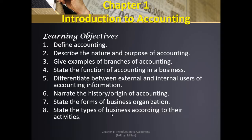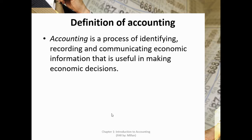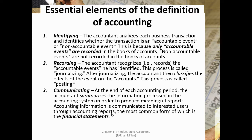Let's define accounting first. Accounting is a process of identifying, recording, and communicating economic information that is useful in making economic decisions. There are three important elements in the definition of accounting: identifying, recording, and communicating. In identifying, the accountant analyzes each business transaction and identifies whether the transaction is an accountable event or non-accountable event, because only accountable events are recorded in the books of accounts.